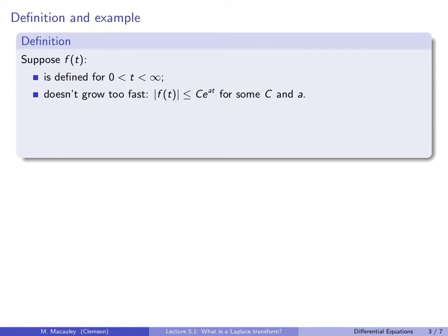We cannot compute the Laplace transform of just any function — we need a few restrictions. Suppose we have a function f(t), typically a function of time, where time starts at 0 and goes onward. The function has to be defined for all positive t. It also cannot grow too fast — specifically, it can't grow any faster than an exponential function, so the absolute value of f(t) must be bounded by some exponential c·e^(at). For example, a function like t² · e^t would be too large for a Laplace transform.